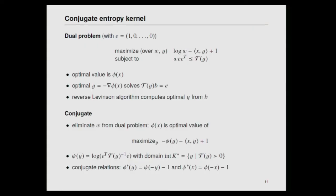The dual of this problem is also interesting. With vector variable Y and Toeplitz matrix T(Y) constructed with Y in its first column, the dual's optimal value also equals this negative entropy kernel optimized over W and Y, which gives the gradient of the kernel. The optimal Y — the negative of the gradient — can be computed efficiently by solving a linear equation given the spectral factor B that solves the primal. The algorithm is Levinson's algorithm run backwards.